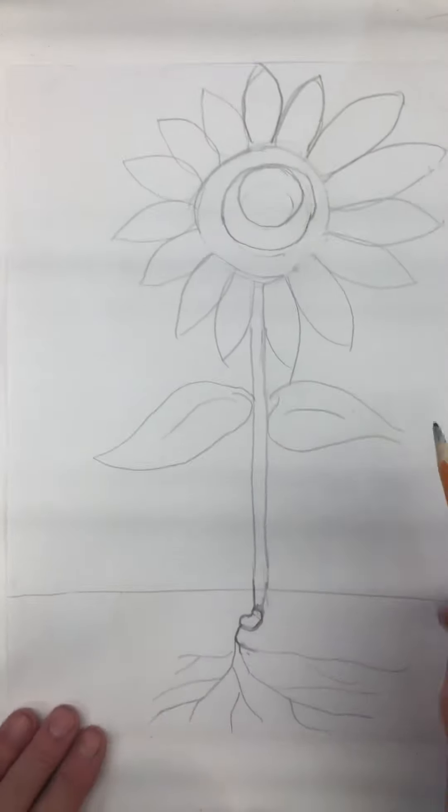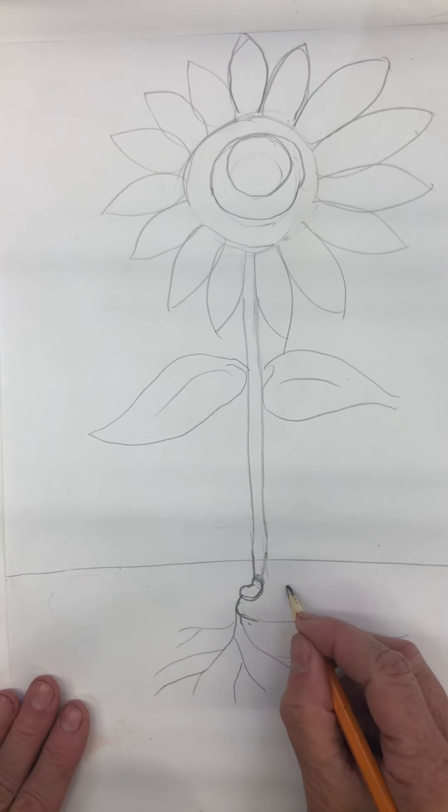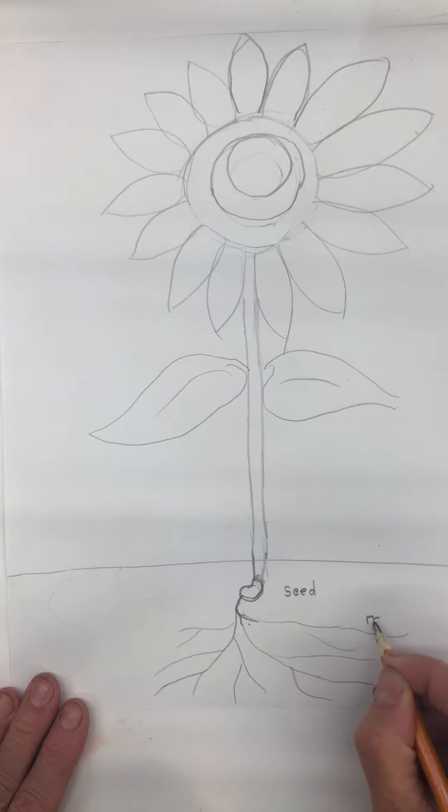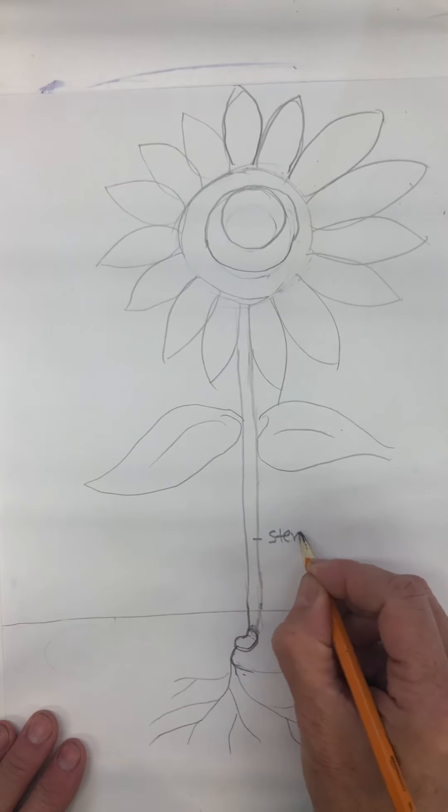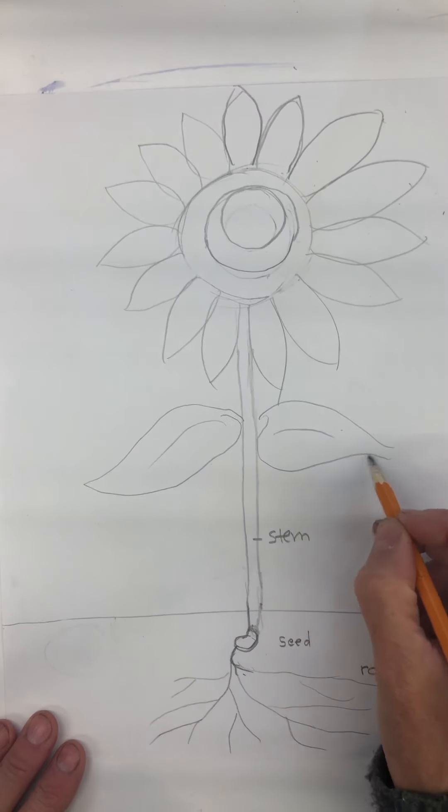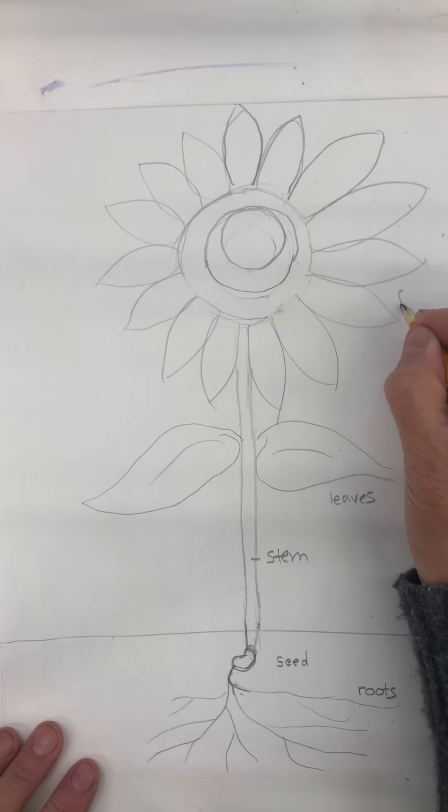So we've got, let's see if we have all our parts. We've got our seed. Now you can label them if you want to. You don't have to. We've got our roots. We have our stem and we have our leaves here and we have our flower up here.